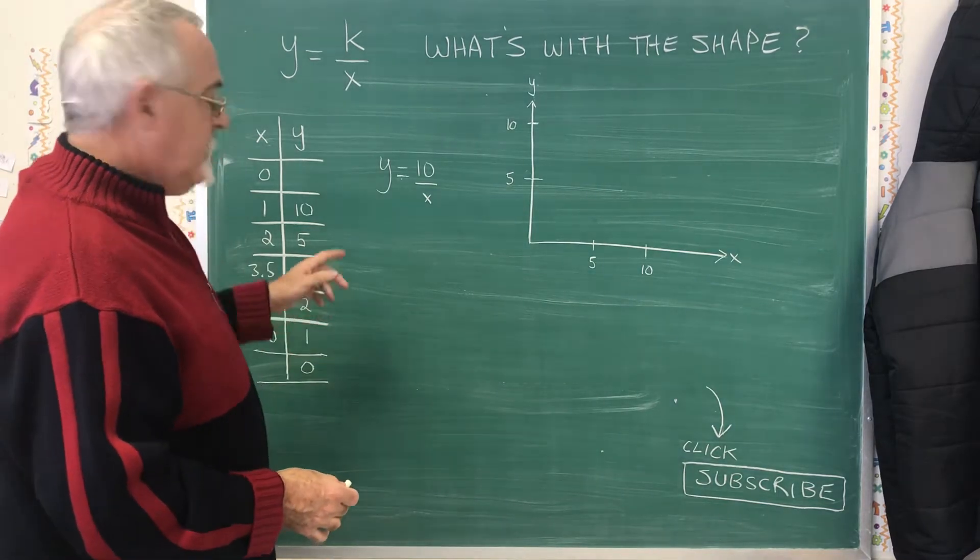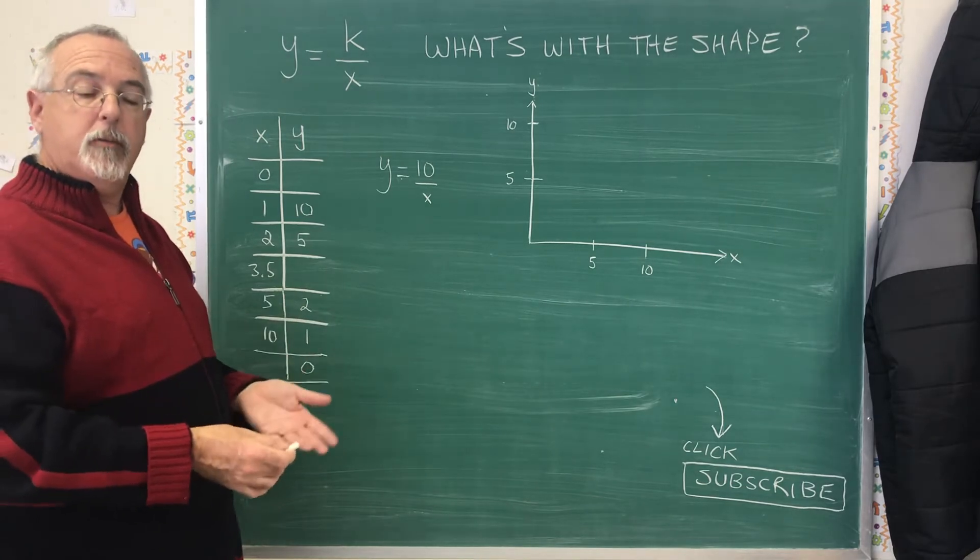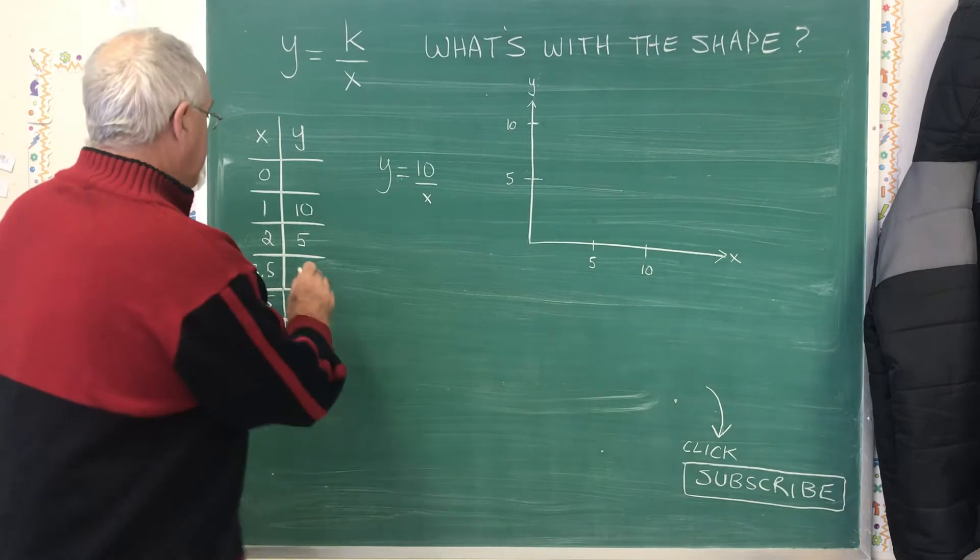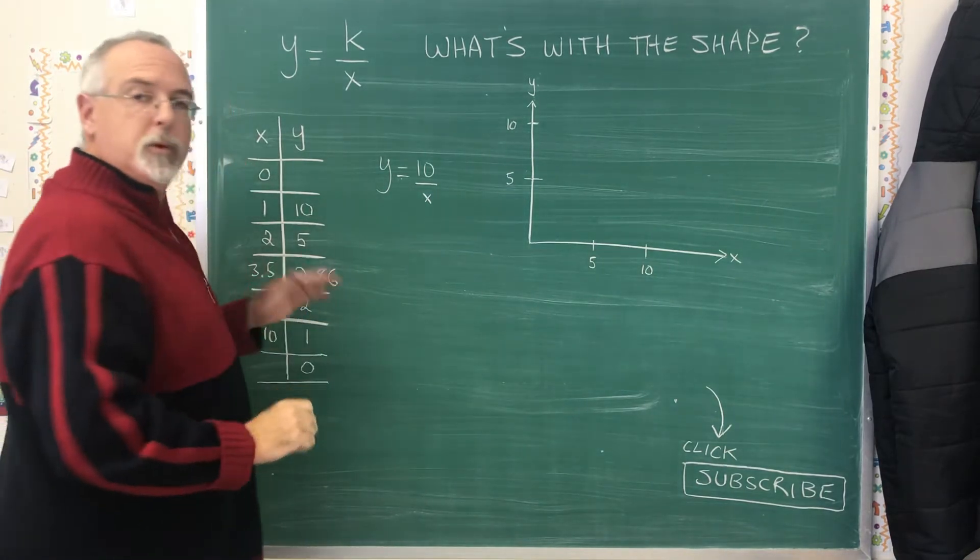If you plug 3.5 into this equation, you're going 10 divided by 3.5, and you get y equals 2.86, which was rounded.